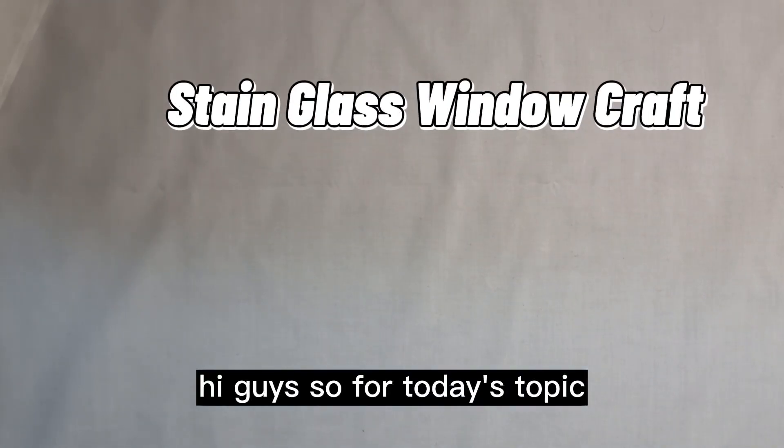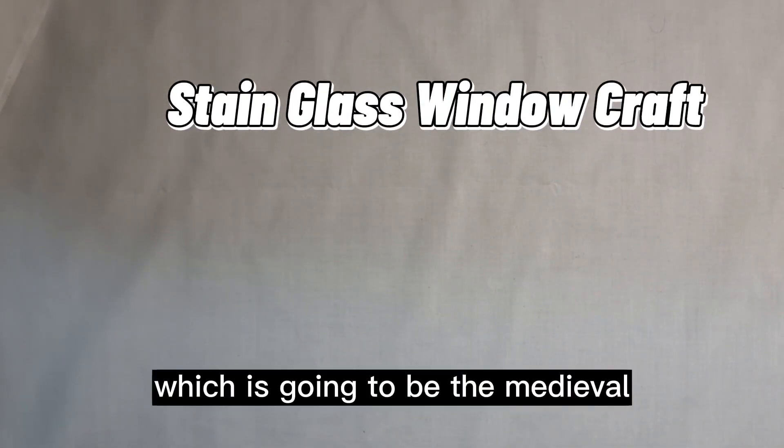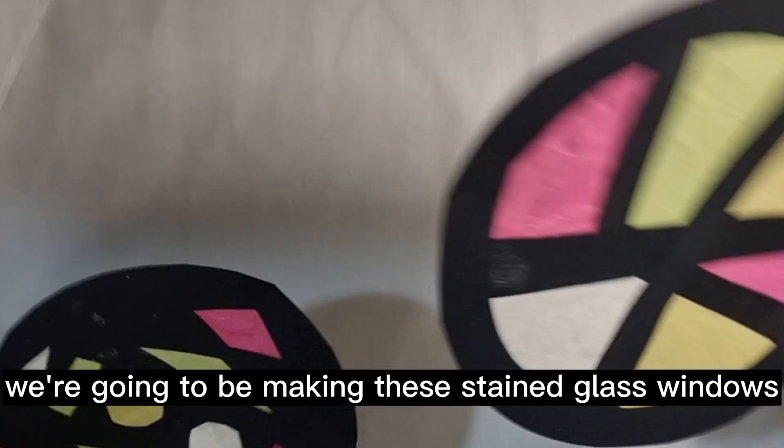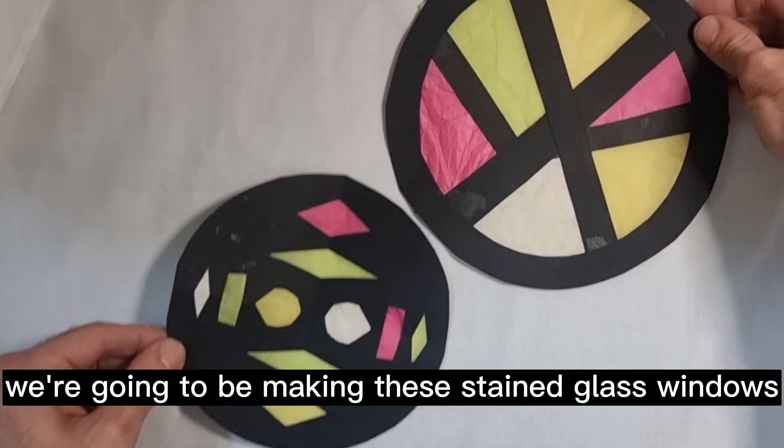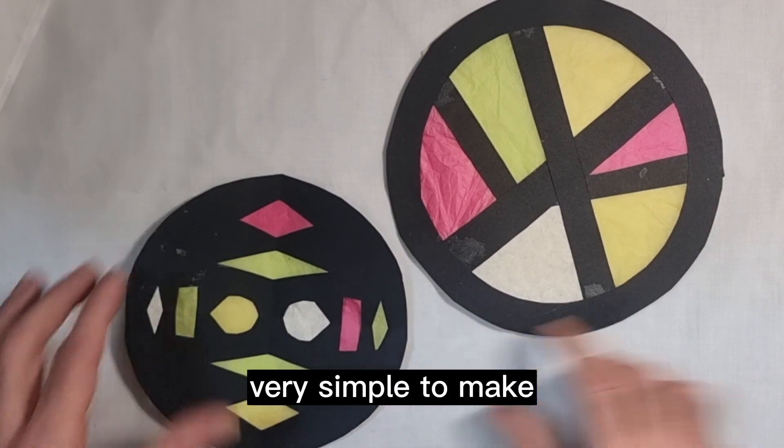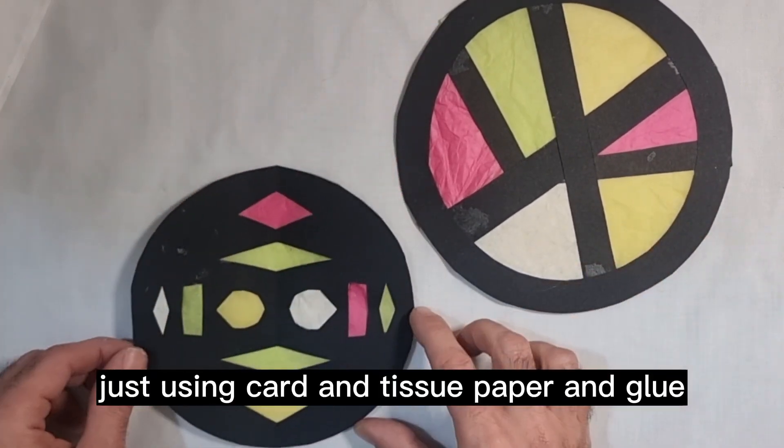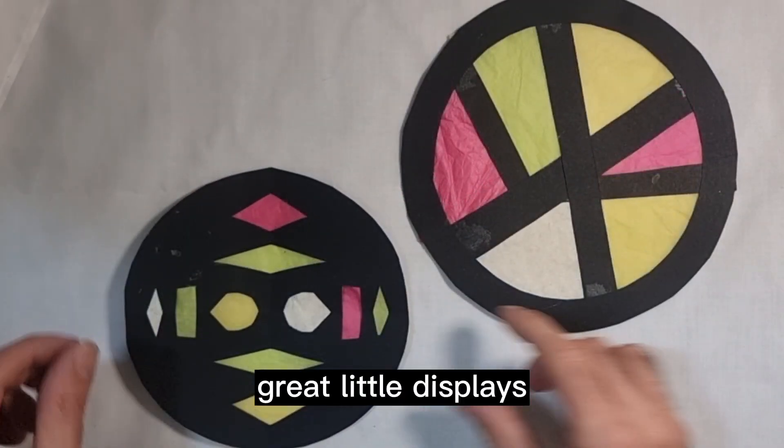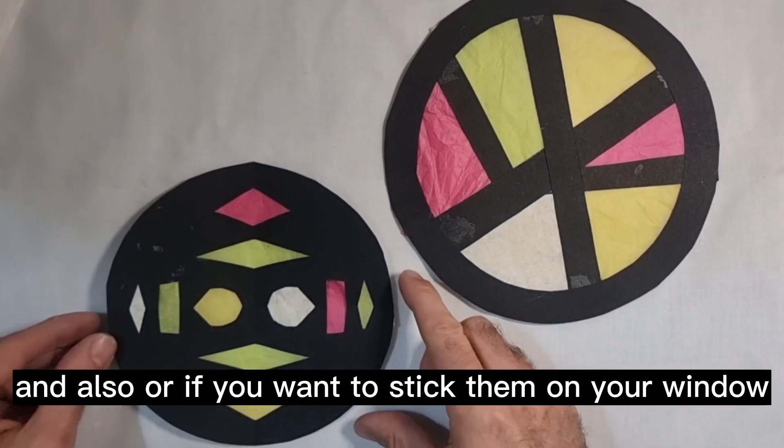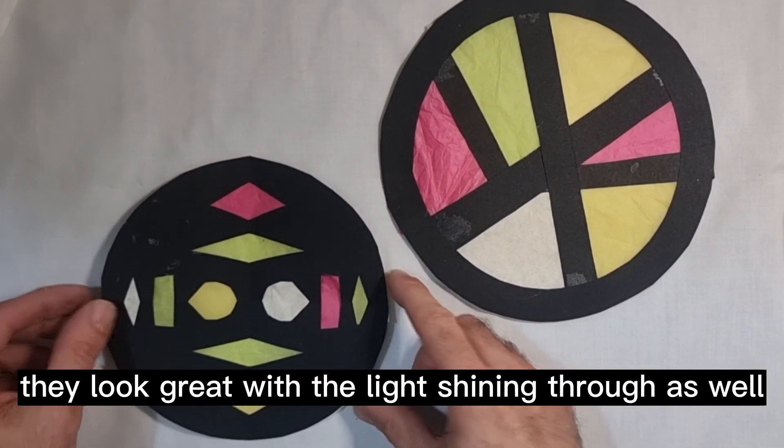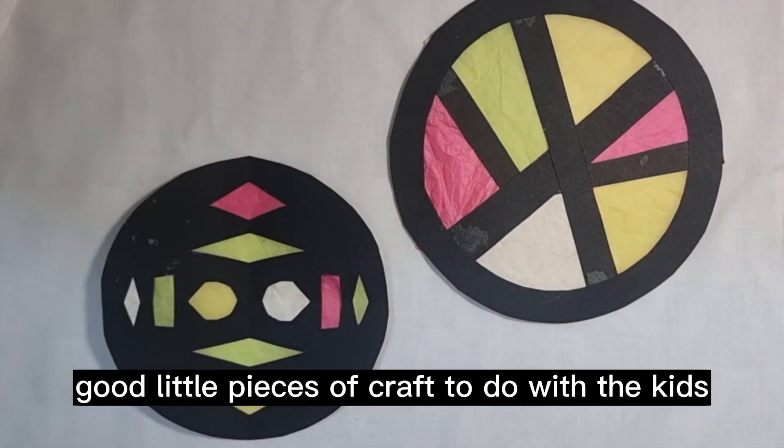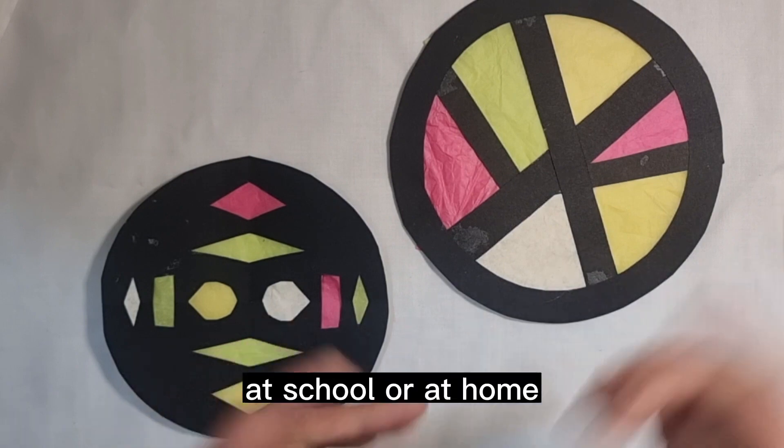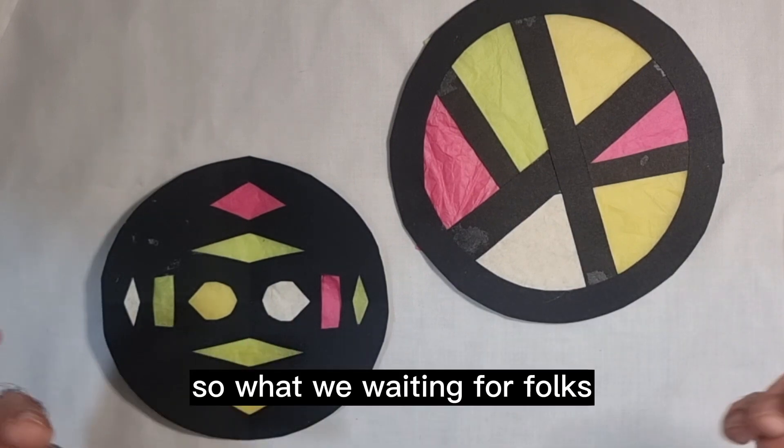Hi guys, so for today's topic which is going to be the medieval topic, we're going to be making these stained glass windows. Very simple to make, just using card and tissue paper and glue. Great little displays to be hanging up in front of your window. They look great with the light shining through as well. Good little pieces of craft to do with the kids at school or at home. So what are we waiting for folks, let's get on with the video.